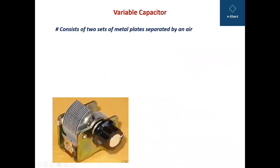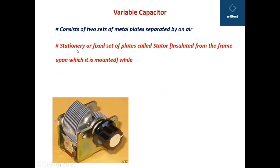In the picture you can see a single block of a variable capacitor which consists of two sets of metal plates separated by air. This is one set of metal plates and this is the second set. This set of plates is the stator plates because it is stationary — it's fixed. The stationary or fixed set of plates is called the stator, and it is insulated from the frame upon which it is mounted.